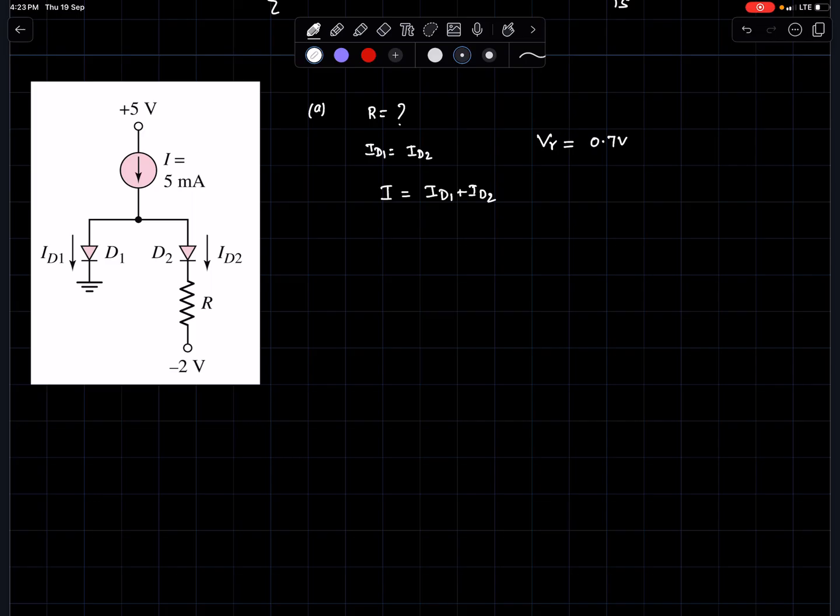If both diodes are conducting, this voltage must be 0.7 volts and this voltage must be 0 volts. For diode D1, it is 0 volts because it's connected to ground. For diode D2, it must be 0 volts.